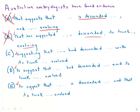In B we have 'descended and evolving' — that's not correct parallelism. C has 'descending and evolved,' so 'had descending' — a noun with its trunk 'evolved,' that's a participle — so that doesn't work. D has 'had descended and its trunk evolved' — okay, so that's correct parallelism at least. And E has 'is descended and its trunk evolved' — that's correct parallelism. So D and E have correct parallelism.